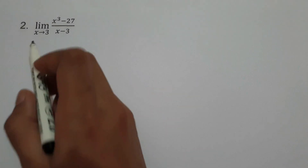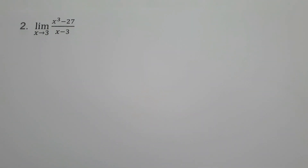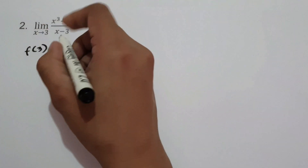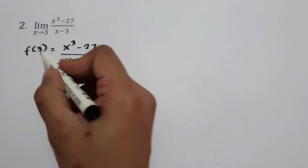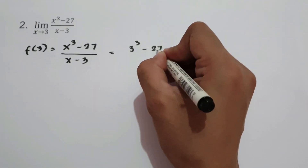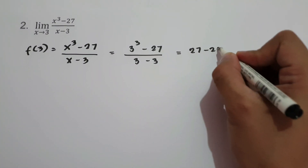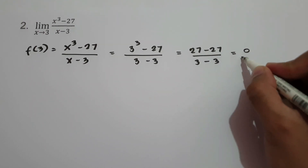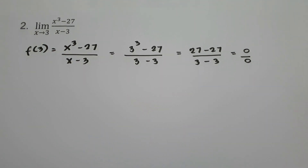On example number 2, we have the limit of x cubed minus 27 all over x minus 3 as x approaches 3. If we substitute x = 3, we get f(3) = 3 cubed minus 27 all over 3 minus 3, which is 27 minus 27 over 3 minus 3 — that is 0 over 0. So we don't have a specific value for the given limit by direct substitution.